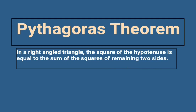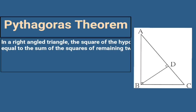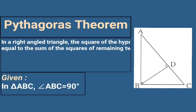Here we draw one right angle triangle. Here is our required diagram — triangle ABC, which is right angled at point B. This means triangle ABC is a right angle triangle. Given: in triangle ABC, angle ABC is equal to 90 degrees.